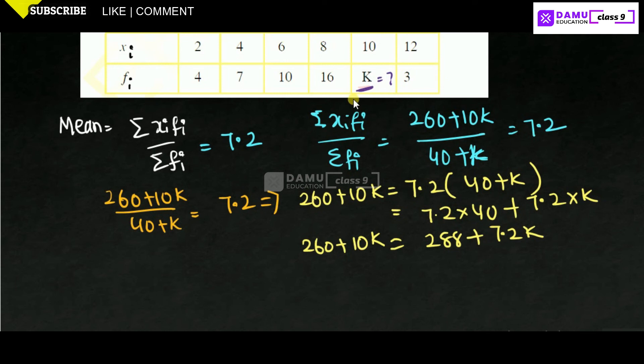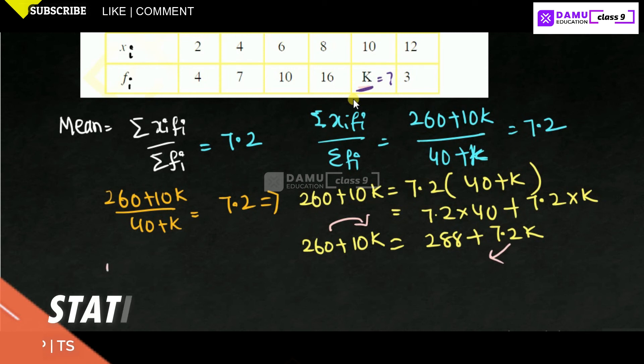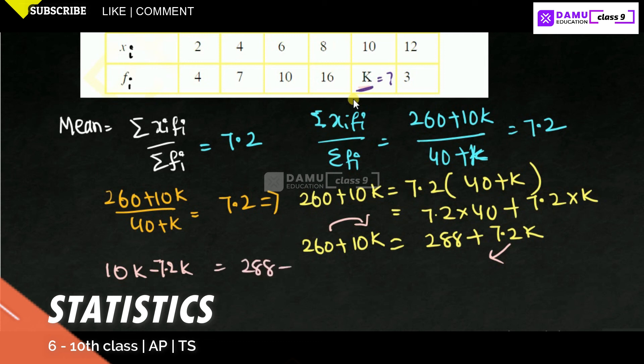Let us shift all these values left side and right side. All the numbers will be right side, all the variables will be left side. 10k minus 7.2k. Because here it is a plus, if you go left side it will become minus. 288 minus 260. k is a common, 10 minus 7.2, that will be equal to 288 minus 260. What is the value? It is 28.